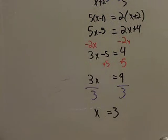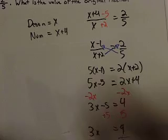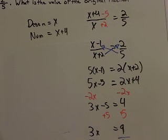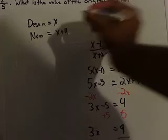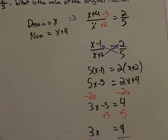Well, if you look up here, x was what? x represents our denominator. So then if x equals three, our denominator equals three, then our numerator is what? Three plus four, so that's seven.